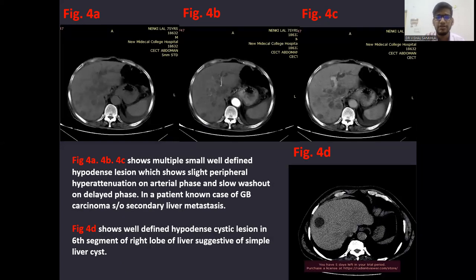This case shows multiple small well-defined hypodense lesions which show slight peripheral hyperattenuation on arterial phase (4B) and slow washout on delayed phase (4C). In a patient who is a known case of GB carcinoma, these lesions are suggestive of secondary liver metastasis. Figure 4D shows a well-defined hypodense cystic lesion in the sixth segment of the right lobe of liver, suggestive of simple liver cyst.